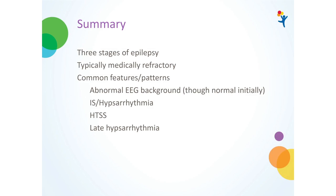In summary: the three stages of epilepsy in CDKL5 are typically medically refractory with common features and patterns. There's an abnormal EEG background that develops, though it's normal initially. We see a lot of infantile spasms and hypsarrhythmia. We also see the characteristic hypermotor tonic spasm sequence, which has not been described in other epilepsy syndromes, and there's late hypsarrhythmia.